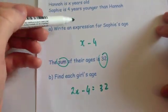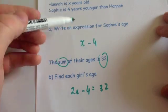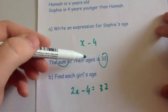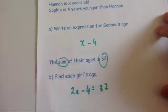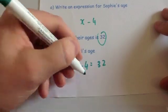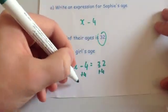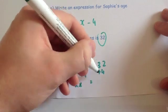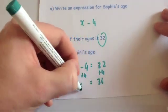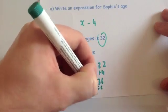So you add the algebraic expressions together: X plus X minus 4 gives 2X minus 4, and that equals 32. Now solve this equation. To get rid of the minus 4, add 4 to both sides, giving 2X equals 36. Then divide both sides by 2, so X equals 18.